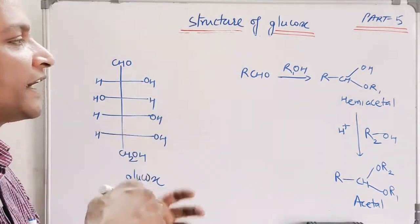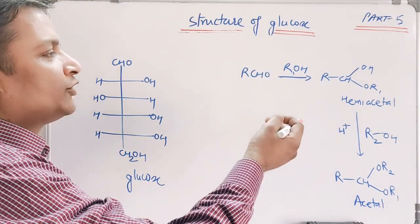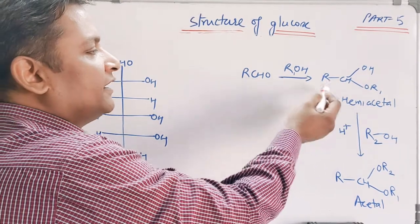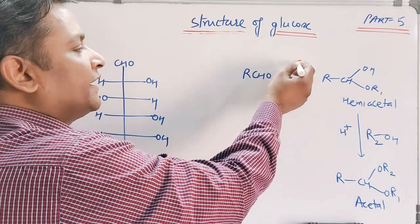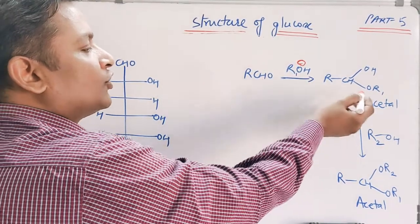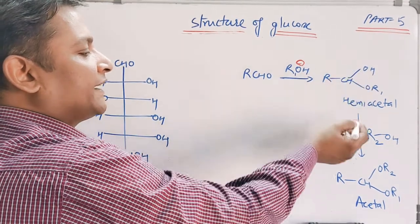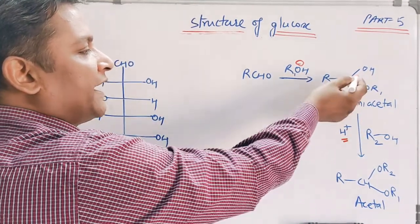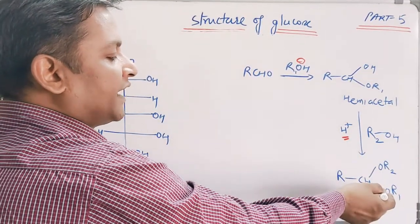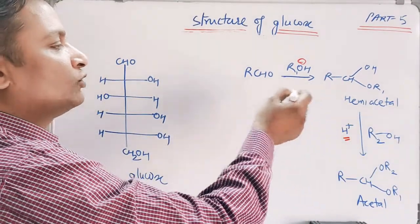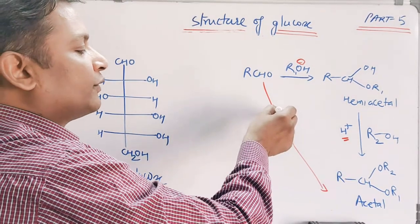Before moving in that direction, I would like to show you once again the reaction of an aldehyde with alcohol. As we know, aldehydes have a tendency to react with alcohol to give a compound known as hemiacetal. This is a nucleophilic addition reaction where the alkoxide attacks on the aldehydic center to give a hemiacetal molecule. This hemiacetal can then react further in the presence of acid with a second molecule of alcohol to give an acetal molecule.